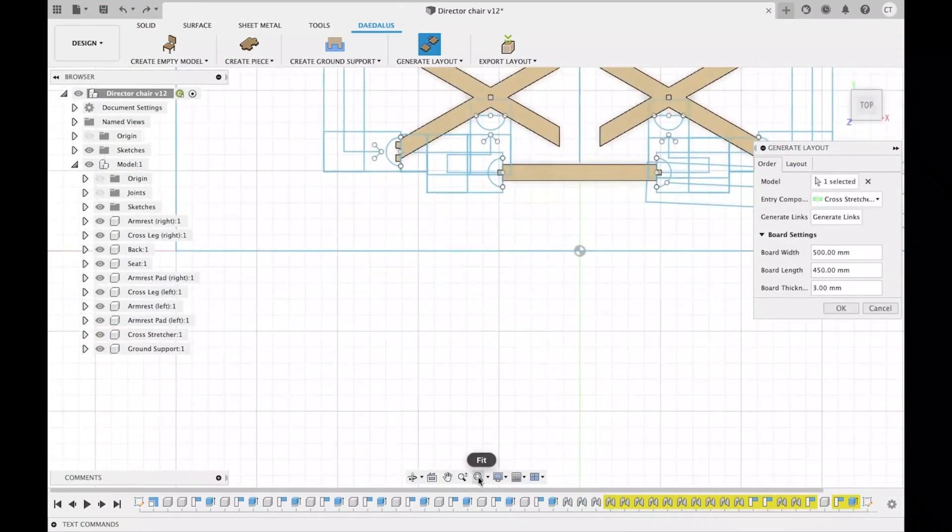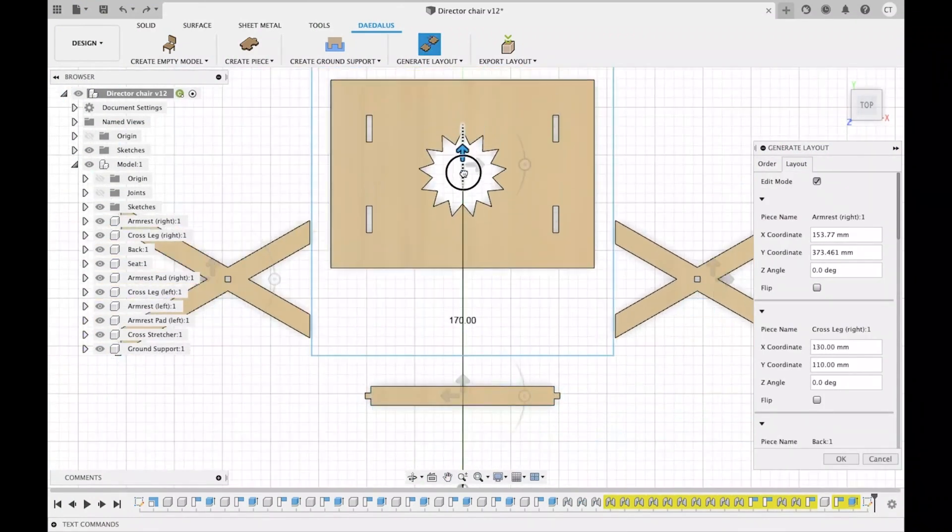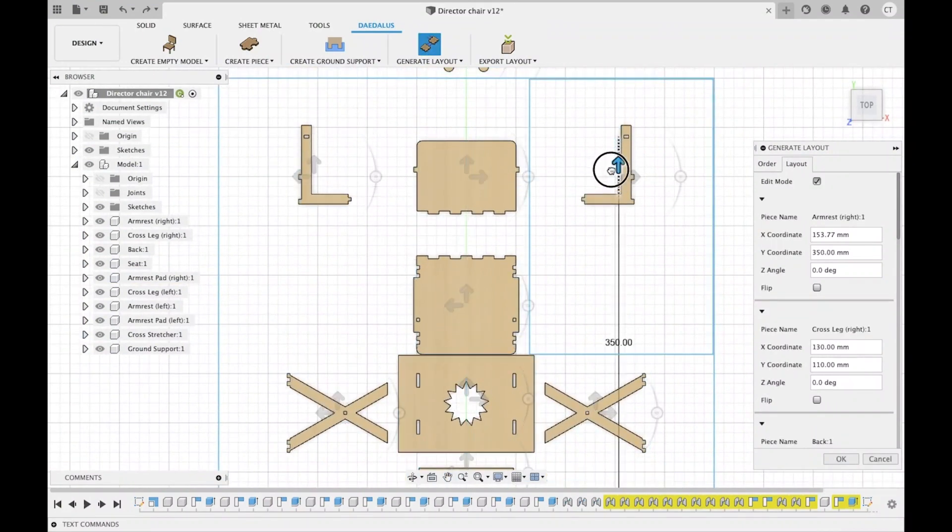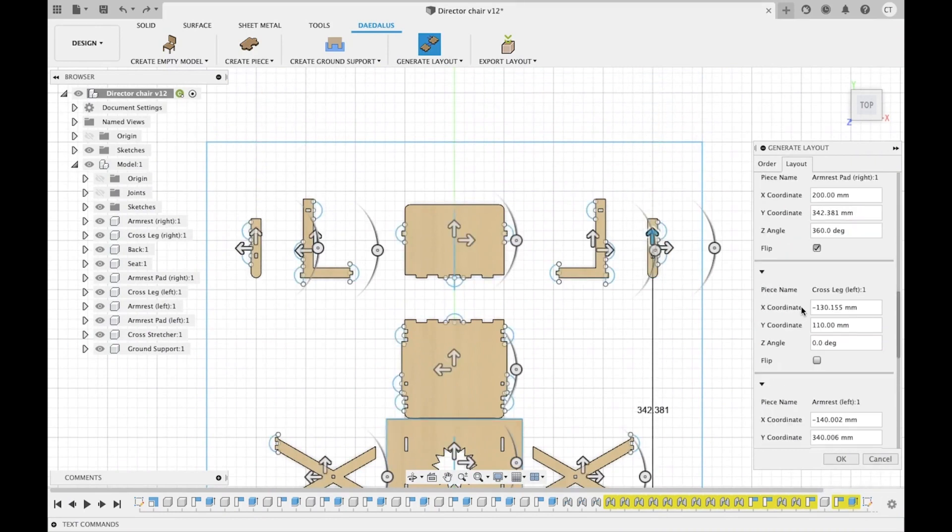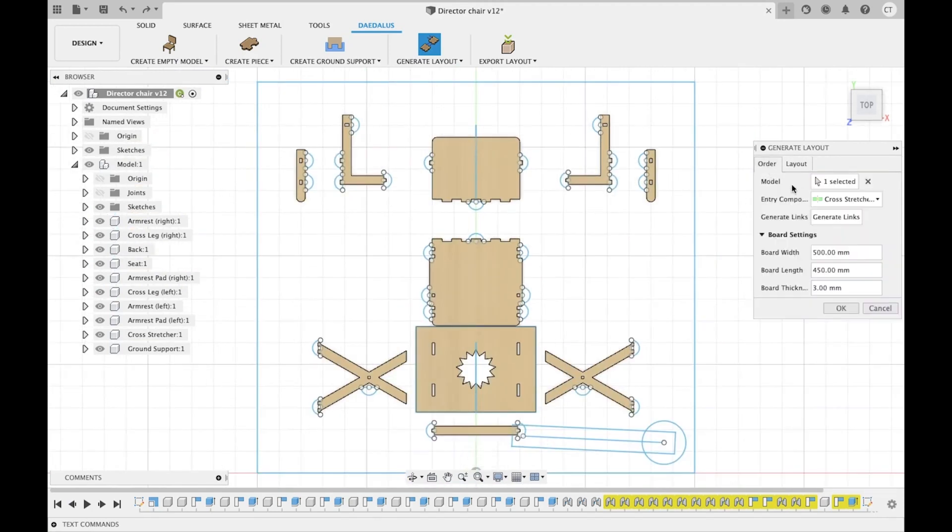The user can further edit the generated layout to arrange laser cut components within the printable area of the board. Daedalus remains accessibility aware throughout the editing stage. For example, the movable range of a component is constrained to maintain the layered assembly order. Symmetrical components will also remain mirrored during editing.